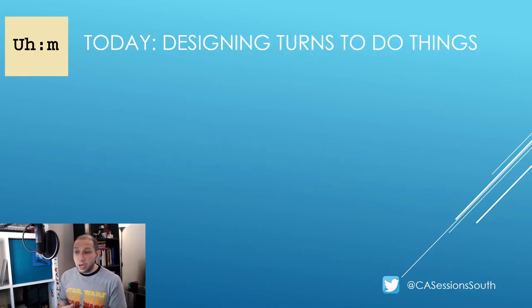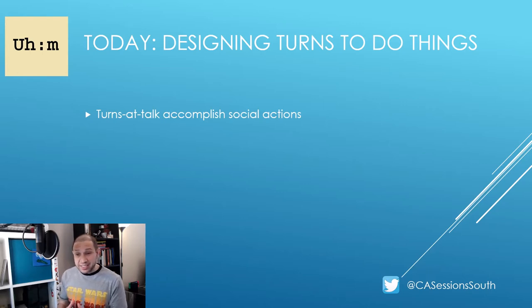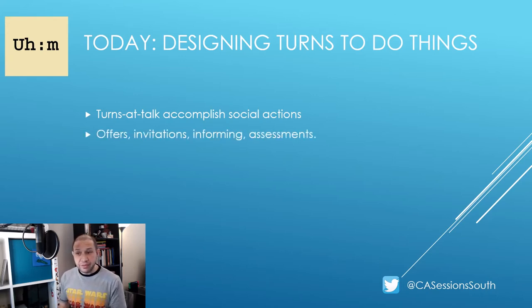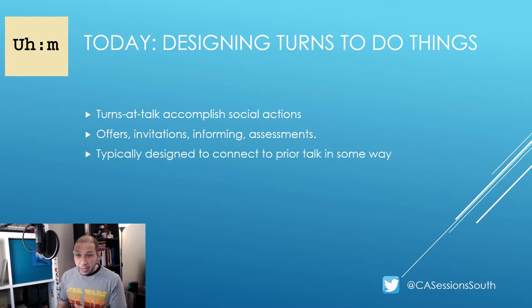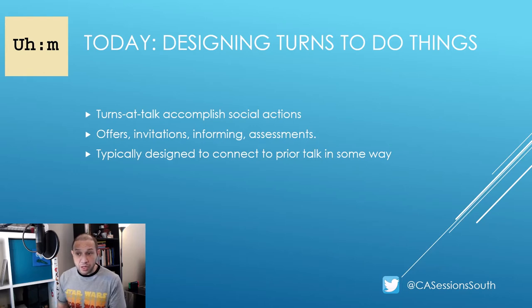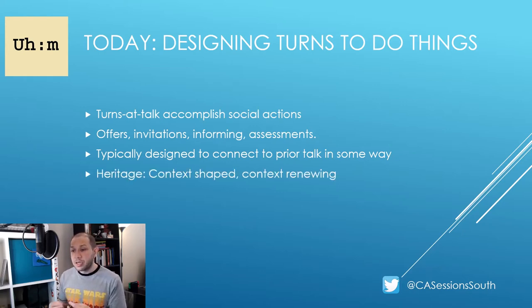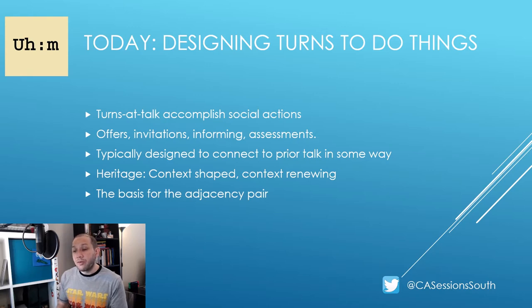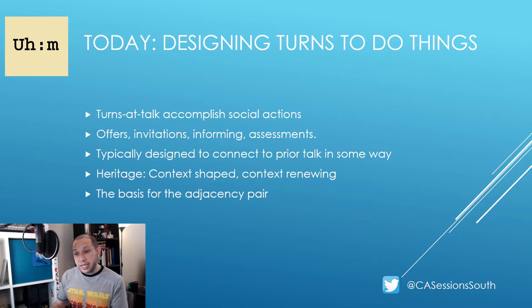For today we're going to take a look at the concept of turn design. When we take a turn at talk, it's designed to do something during the interaction — that is, the turn can be designed to accomplish a particular social action. Each turn is typically designed to be related in some way to what has come before it, and likewise each turn at talk can set up conditions and contingencies for what comes next. As John Heritage describes it, turns at talk are both context-shaped and context-renewing. And it's this understanding that is the basis of the adjacency pair, or as Sacks initially described it, the concept of nextness — where one turn at talk is typically followed by one particular other turn at talk.